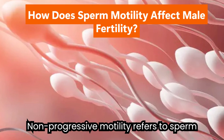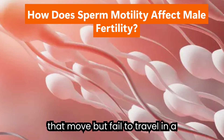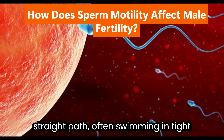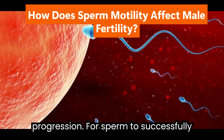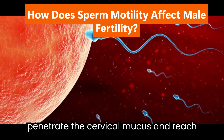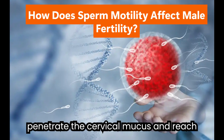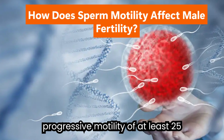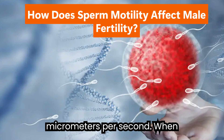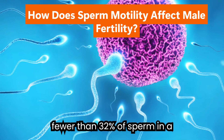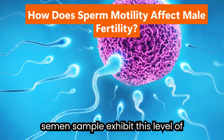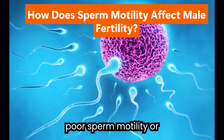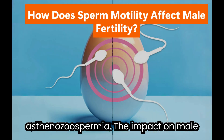Non-progressive motility refers to sperm that move but fail to travel in a straight path, often swimming in tight circles or showing little forward progression. For sperm to successfully penetrate the cervical mucus and reach the egg, they must demonstrate progressive motility of at least 25 micrometers per second. When fewer than 32% of sperm in a semen sample exhibit this level of efficiency, the condition is diagnosed as poor sperm motility, or asthenozoospermia.